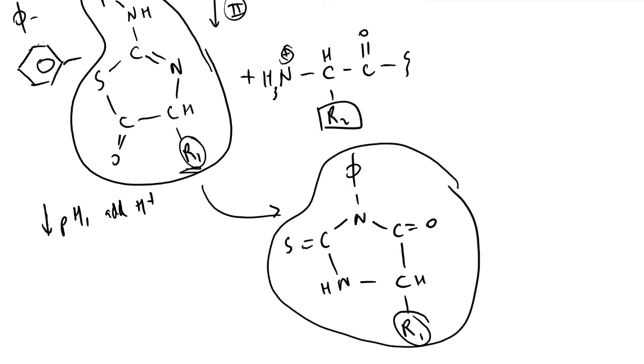Mass spec would allow us to identify the R1 group. By placing this molecule into a quadrupole, for instance, these bonds would all be broken.